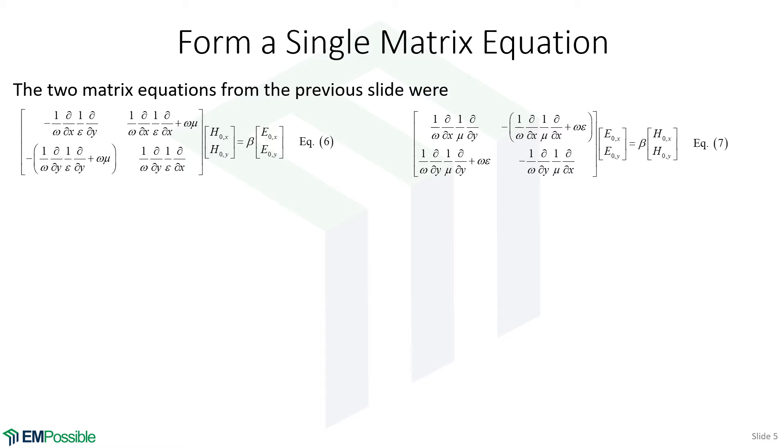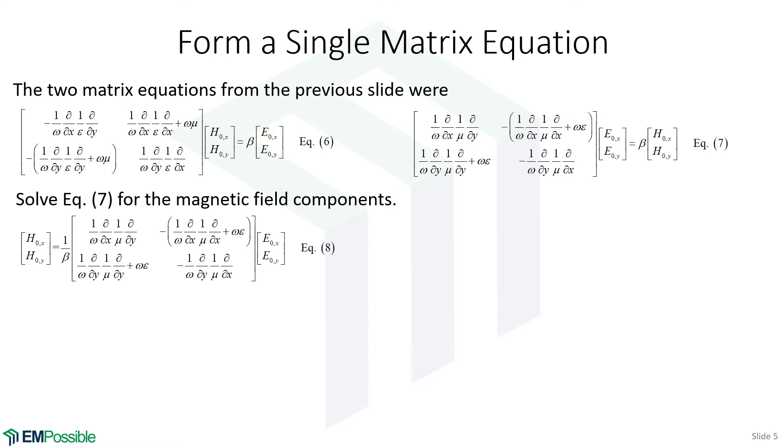These are those two matrix equations from the last slide. From here, we can actually derive a matrix wave equation by combining these. The first thing we'll do is we'll take equation 7 and solve it for the magnetic field. So it's really just taking beta over to the other side. And when we do that, here's the equation we have.